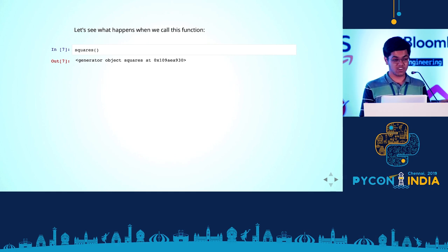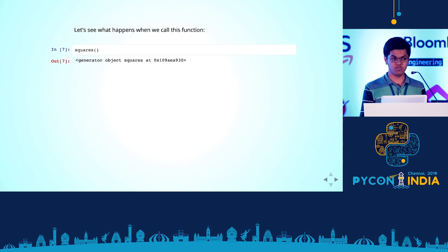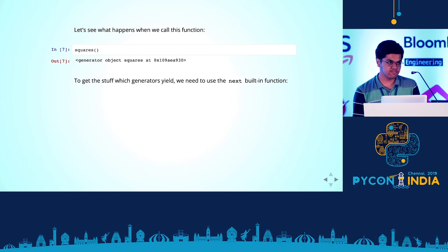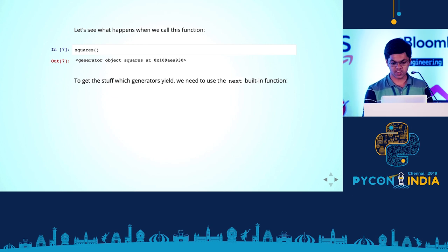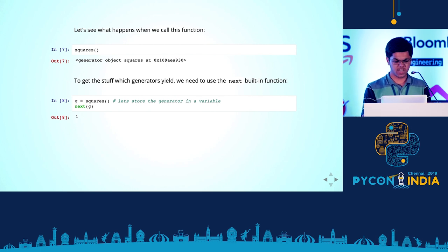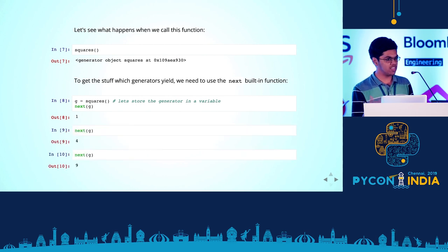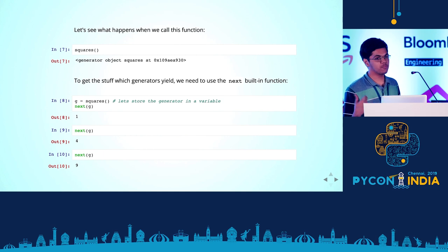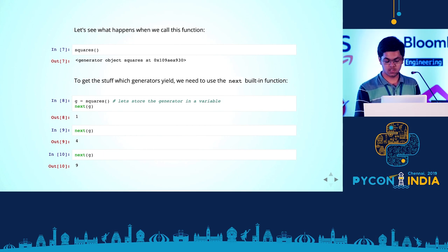It turns out, if you want to get the stuff out of these generators — what they yield — you need to use next. If you call next on this generator, you get one. If you call next again, you get four. You can keep calling next and it keeps giving you squares.